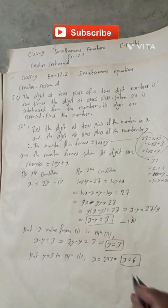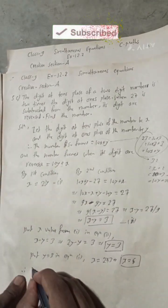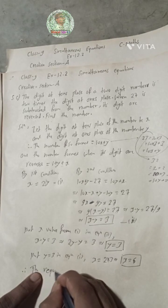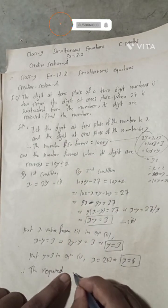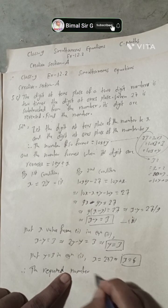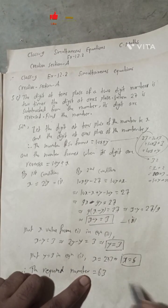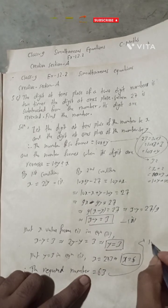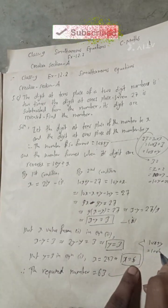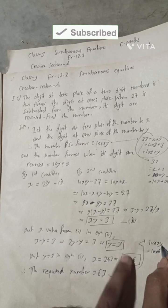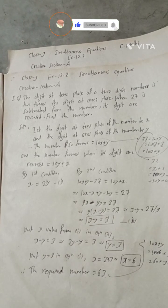We got x = 6 and y = 3. Therefore, the required two-digit number is 10x + y = 10 times 6 plus 3 = 60 + 3 = 63. So the required number is 63.